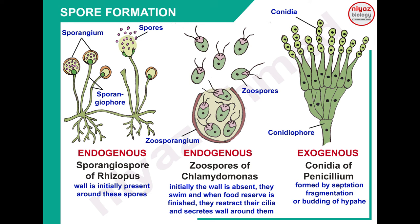Third type is exogenous - Penicillium کا example - یہاں پر spores body کے باہر بن رہے ہیں۔ Conidiophore وہ stock ہے جس کے اوپر conidia formation ہوگا - اور جو spores بنتے ہیں ان کے چاروں طرف کوئی covering نہیں ہے، کھلے ہوئے spores ہیں - یہ conidia ہیں جو ultimately release ہو جائیں گے۔ Exogenous spores یعنی conidia ascomycetes اور basidiomycetes میں ملتے ہیں۔ So here we come to an end of this topic - in the next lecture vegetative propagation discuss کریں گے۔